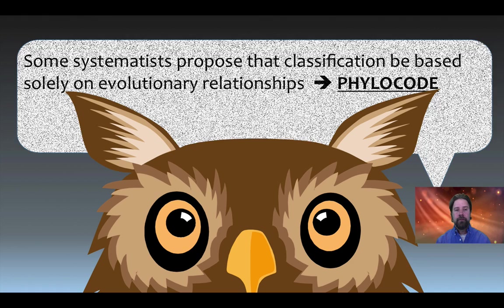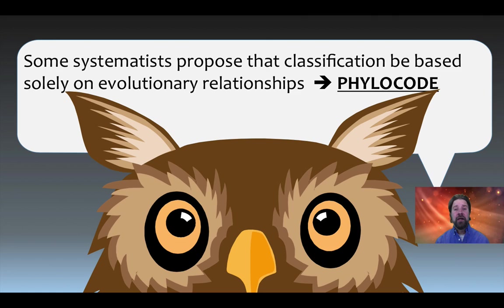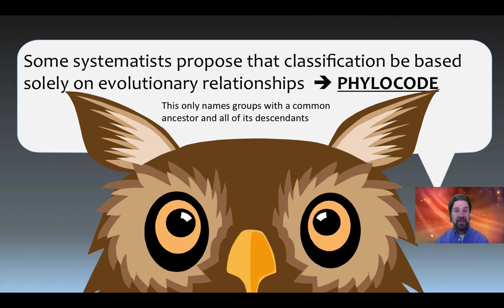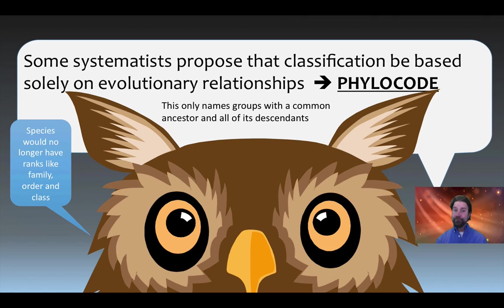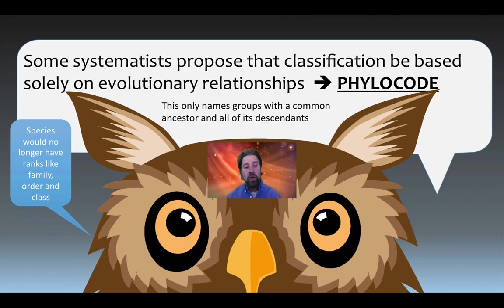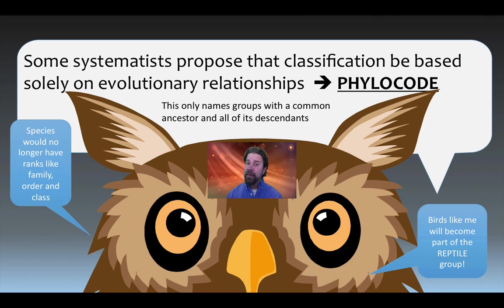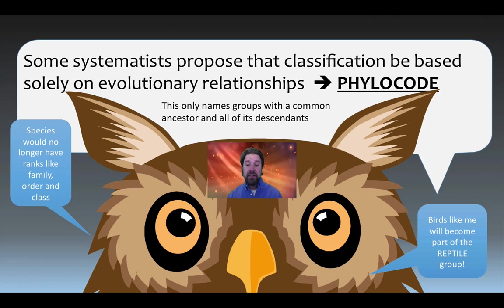Because of the weaknesses of Linnaeus's binomial nomenclature system, some systematists now propose the PhyloCode — a classification based solely on evolutionary relationships. This system names only groups with a common ancestor and all of its descendants, removing traditional ranks like family, order, and class. For example, protists have already lost their kingdom status, and birds like owls would become part of the reptile group rather than being in a separate, unrelated bird category.